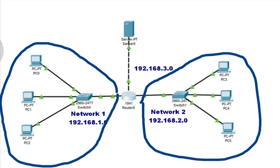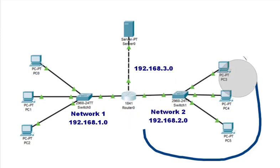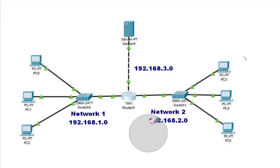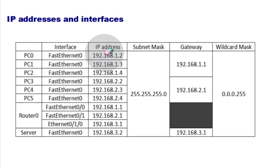We will configure the PCs according to this particular configuration. You can note down this configuration for PC0, PC1, and PC2 — we will use these IP addresses. This is the common gateway for all of them.